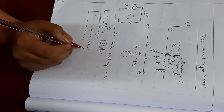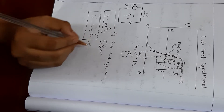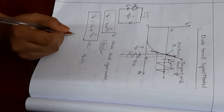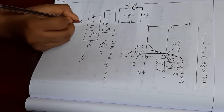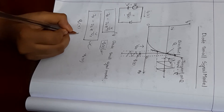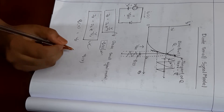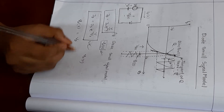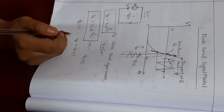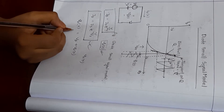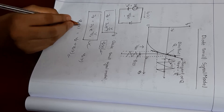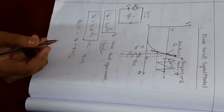When we apply a small signal voltage V_D, the instantaneous voltage will be like this. The instantaneous voltage V_T is equal to V_D — this is the diode battery voltage — plus the small signal voltage V_D(t). By adding these two, this will be the instantaneous diode voltage, and after that the equation of the current will also change.